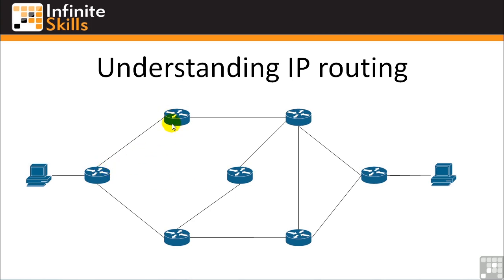Let's say one path is a DS3 — a 45 megabit line — and the other is a dial-up line. Would you really want your traffic going over the dial-up line if the DS3 is available? No. So this router chooses to send traffic out the DS3 because it has lots of bandwidth and is hardly used. The next router is only connected to one other router, so it forwards accordingly. Then a router with two choices — a T1 at 1.5 megabits or a DS3 — will choose the DS3 path even though it's longer, because more bandwidth is available, making it the quicker route.